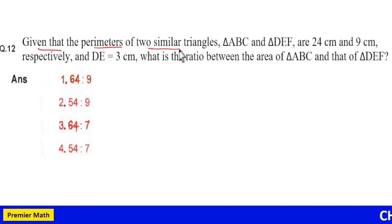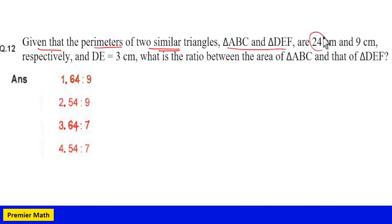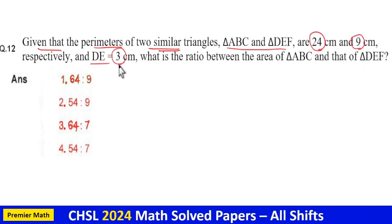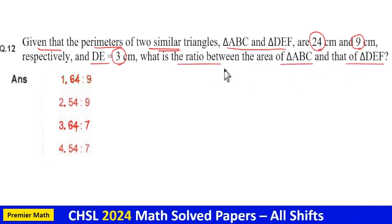Given that the perimeters of two similar triangles, triangle ABC and triangle DEF, are 24 cm and 9 cm respectively, and DE is 3 cm, what is the ratio between the area of triangle ABC and that of DEF?